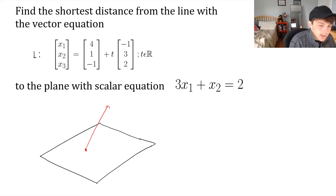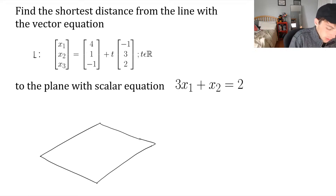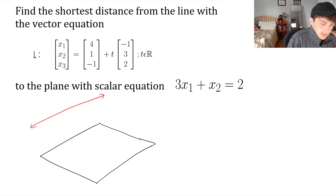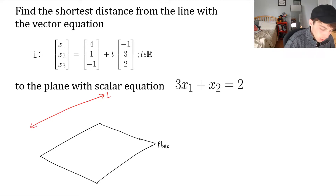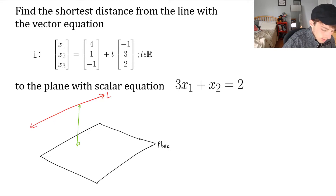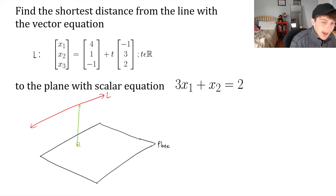There is a chance that a professor could try to trick you, and the answer would be zero. But usually it means there's some line L that is parallel to the plane, and we're looking for the shortest distance to the plane. We know it's going to be that perpendicular distance — shortest distance always has to do with what's perpendicular to what you're looking at.